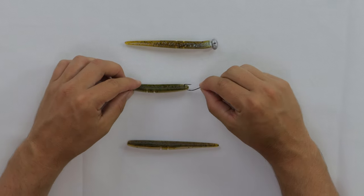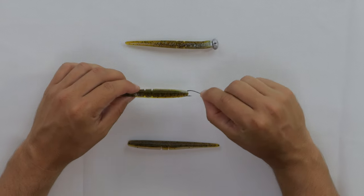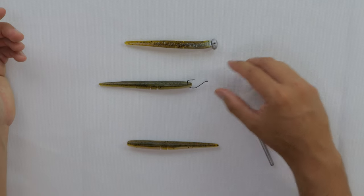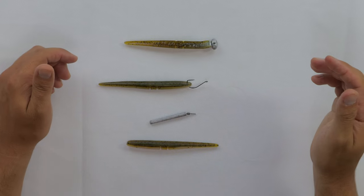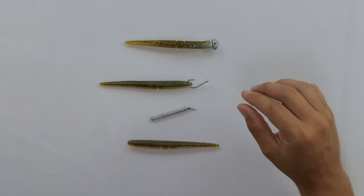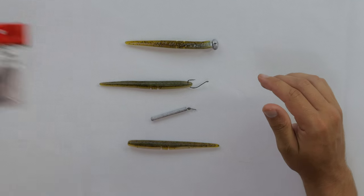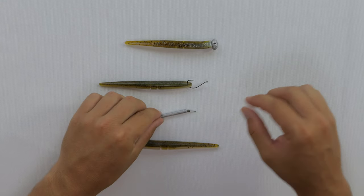So you're just putting it right through the nose, coming right out the top, right in the center. And just like that, nice and easy. I have a quarter ounce Bakudan lead drop shot weight that I'm using for this drop shot setup.